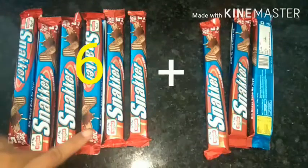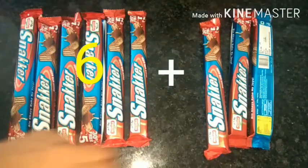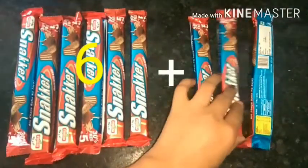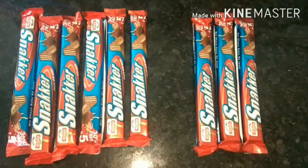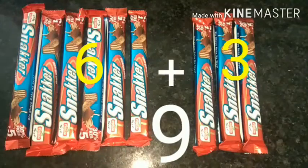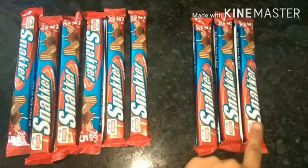Let's count chocolates which are given by my friend. One, two, three. So six plus three are nine. So I have nine chocolates.